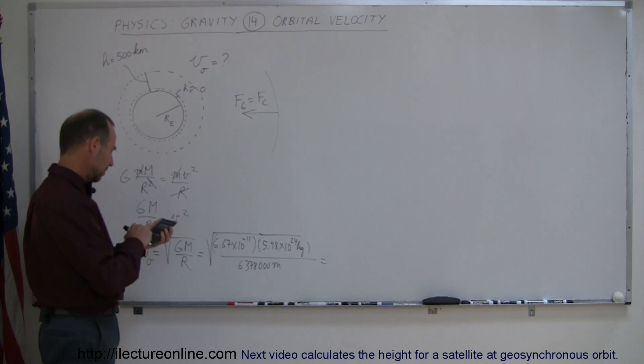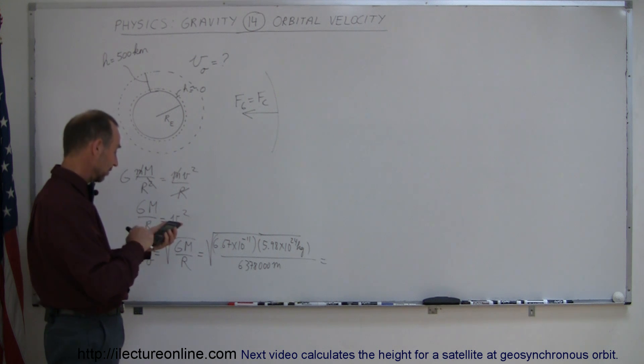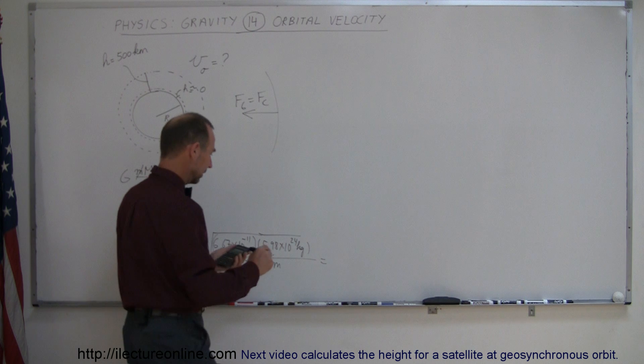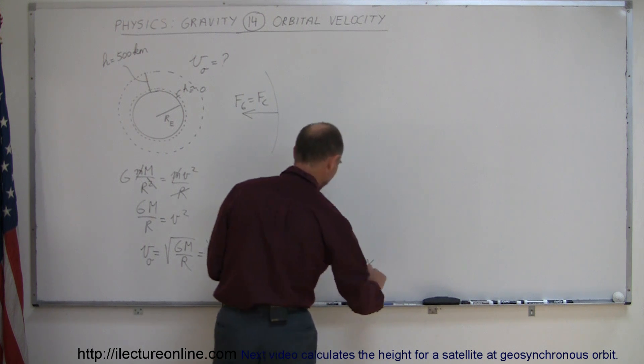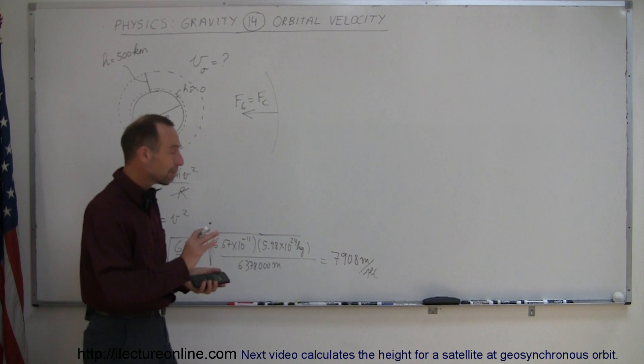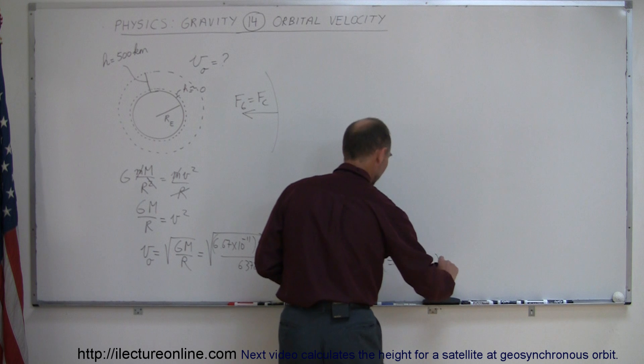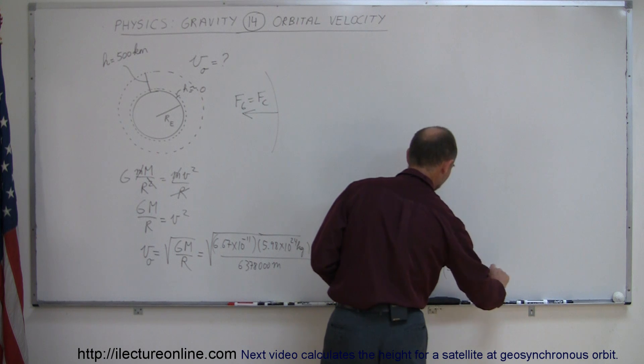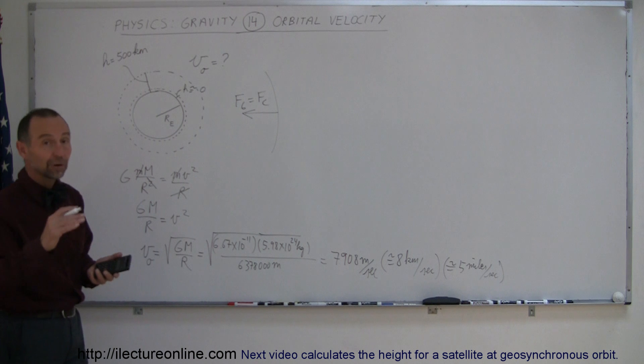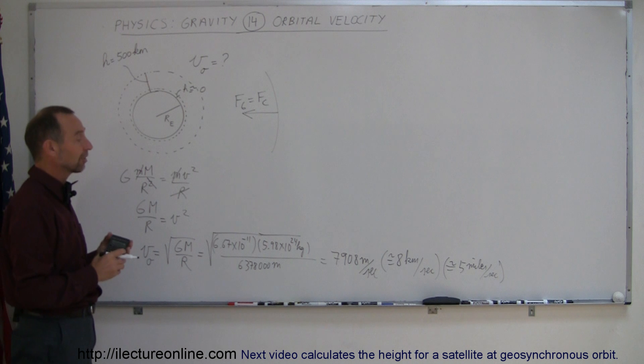So we have 6.67 e to the -11 times 5.98 e to the 24 divided by 6,378,000, and take the square root of that, and we get 7,908 meters per second. That's about 8 kilometers per second, which is about 5 miles per second. So an object that wants to stay in orbit around the Earth, very close to the surface of the Earth, would have to be moving at about 5 miles per second, 8 kilometers per second, or almost 8,000 meters per second.